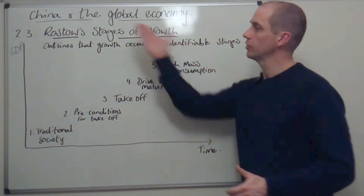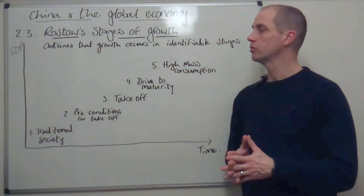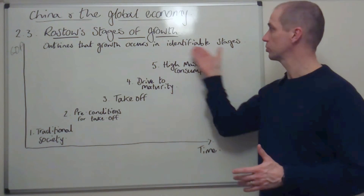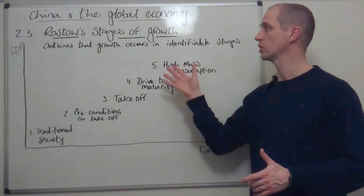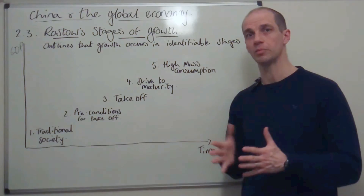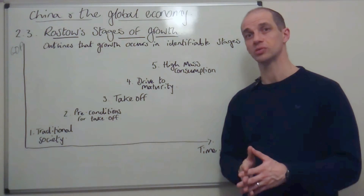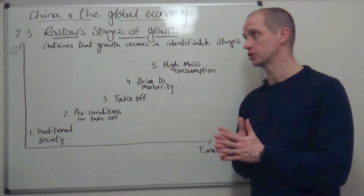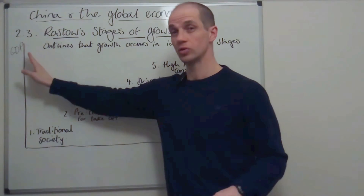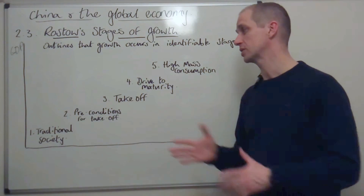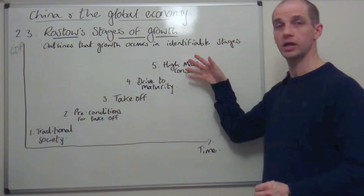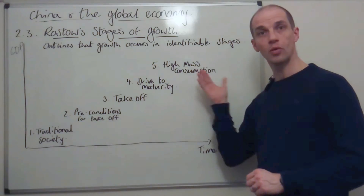This is called Rostow's Stages of Growth, and it outlines that growth occurs in identifiable stages — those identifiable stages are highlighted here. You can identify what stage of growth and development a country is in by certain characteristics within their economy. Looking at the axes: we have GDP on the y-axis and time on the x-axis, showing that as time goes by, economies develop and become wealthier.